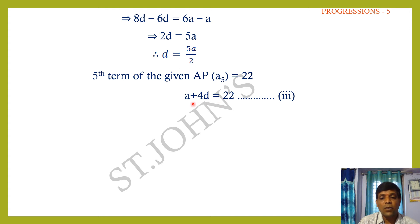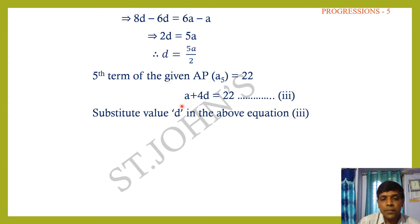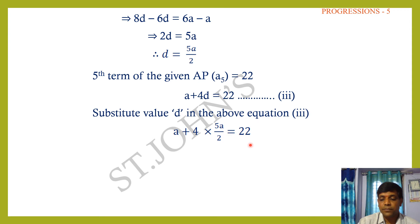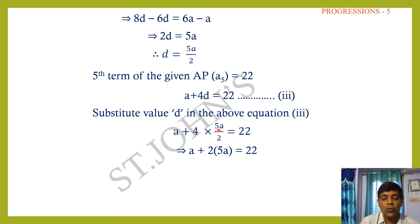Let the nth term be 132 more than the 54th term: aₙ = 639 + 132 = 771. Using nth term formula: aₙ = a + (n−1)d, so 771 = 3 + (n−1)×12.